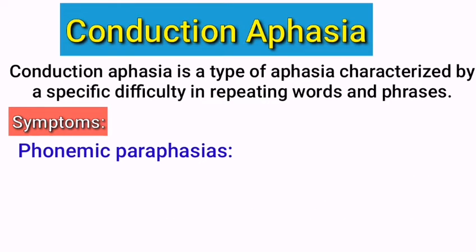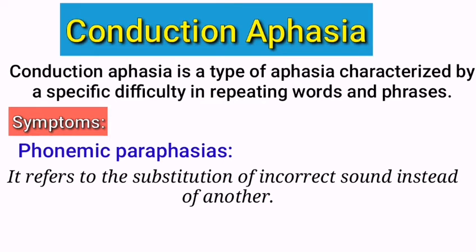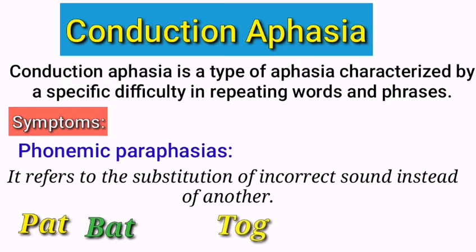Phonemic paraphasias are also a symptom of Conduction Aphasia. Phonemic paraphasias are errors in speech production where one or more sounds are substituted by incorrect ones. These errors can occur when a person is trying to produce a word, a phrase, or a sentence. They are one of the most common types of speech errors in aphasia. In this aphasia, one sound is substituted by another — for example, the person might say 'pat' instead of 'bat', or 'tog' instead of 'dog'.